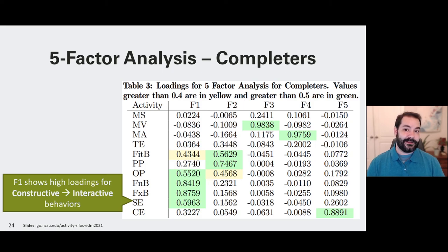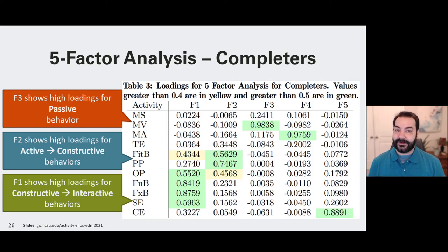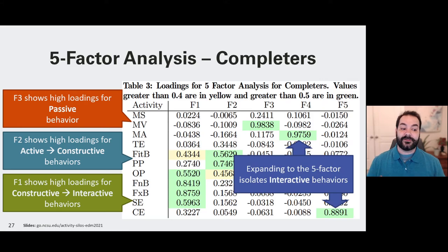Now when we look at the five-factor analysis, that F1 is still showing us constructive to interactive behaviors. F3 is still showing us passive behaviors. However, we do now have two additional variables that have been created, F4 and F5, and these are showing interactive behaviors solely. For example, the module assessment by itself and a coding exercise by itself.